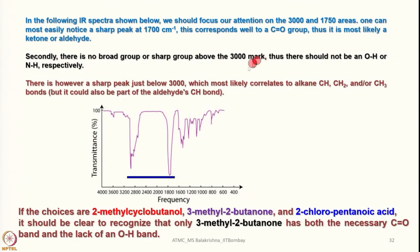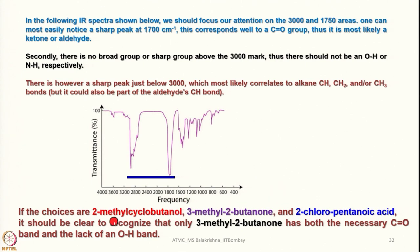In the following spectrum, focusing on 3000 and 1750 cm⁻¹: there is a sharp peak around 1700 cm⁻¹, indicating a C=O group — most likely a ketone or aldehyde. There is no broad peak around 3000 cm⁻¹, so no O-H or N-H is present. There is a sharp peak just below 3000 cm⁻¹, corresponding to alkane C-H, CH2, or CH3 bonds. Given the options — 2-methylcyclobutanol, 3-methyl-2-butanone, and 2-chloropentanoic acid — we can immediately identify this as 3-methyl-2-butanone, which has both the necessary C=O group and lacks an O-H bond.